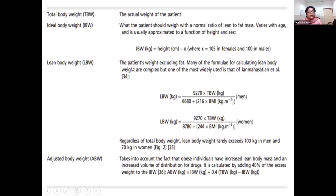To understand drug dose calculation, a few definitions are important. Total body weight is the actual weight on the scale. Ideal body weight is the weight the patient should weigh with a normal lean-to-fat ratio, calculated as height (cm) minus 100 for males and minus 105 for females. Lean body weight is the patient's weight excluding fat; the formula is complex but is the most used. Adjusted body weight accounts for the fact that obese individuals have increased lean body mass: it is ideal body weight plus 0.4 times the excess weight (total body weight minus ideal body weight).